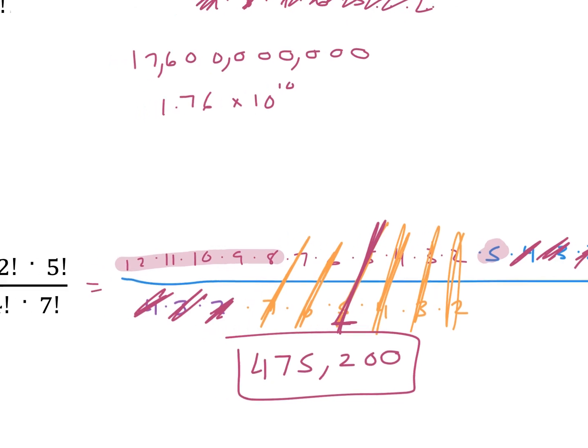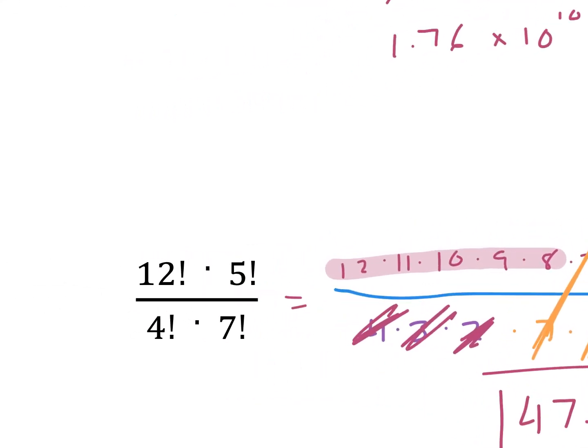There is also a button in most calculators that does the factorial for you. In some calculators, you can just put this in and divide it by the other value. Just if your calculator has the factorial button, you can do that — or you can just write it out and cancel it.